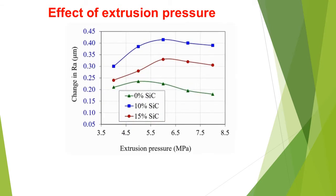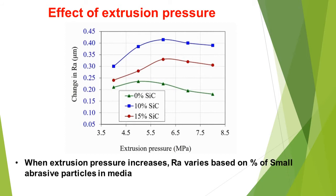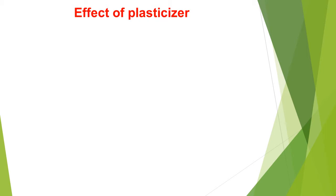The effect of extrusion pressure is noted from this particular graph, in which when extrusion pressure increases, the RA value varies based on the percentage of silicon carbide particles in the media.